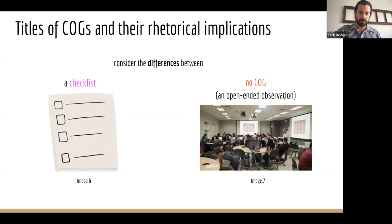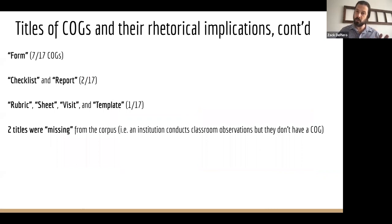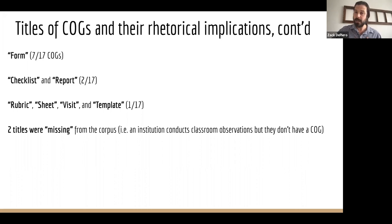So what titles emerged from this corpus? Far and away, 'form' was used more than anything else — it appeared in seven out of the 17 COGS, accounting for roughly 40% of the data set. 'Checklist' and 'report' were each used twice, and the following titles were each used once: rubric, sheet, visit, and template. Two titles were missing from the corpus, suggesting those programs conducted classroom observations in that open-ended way.